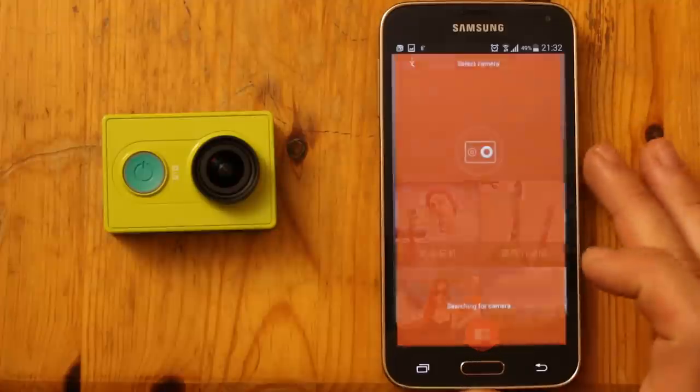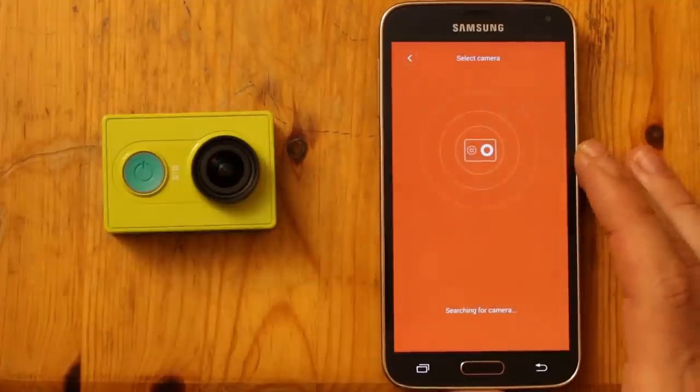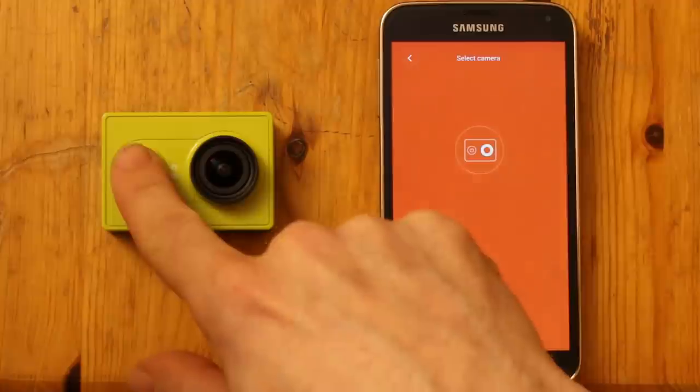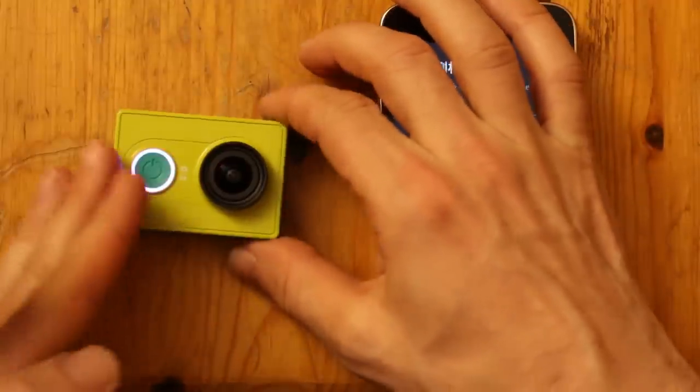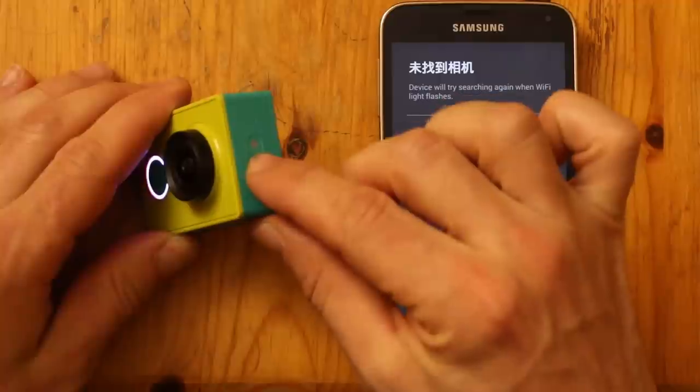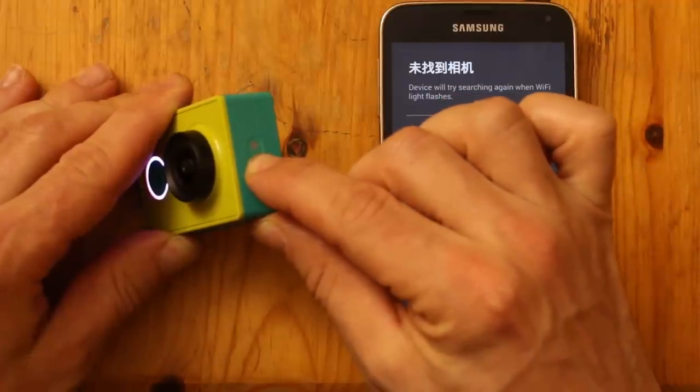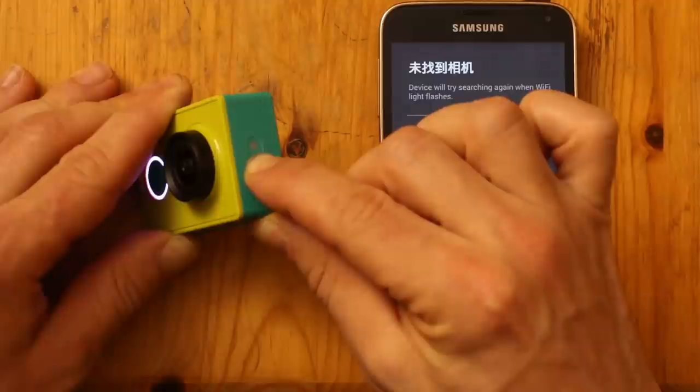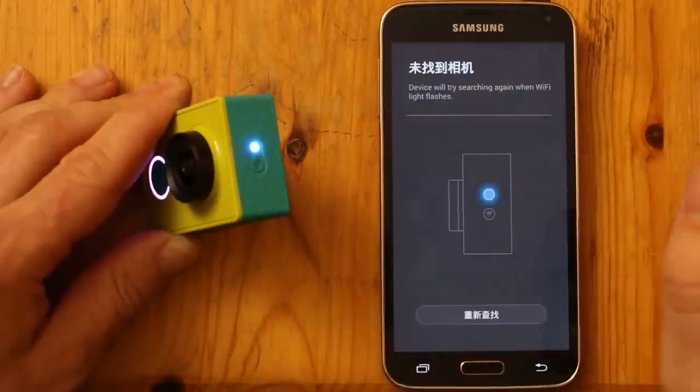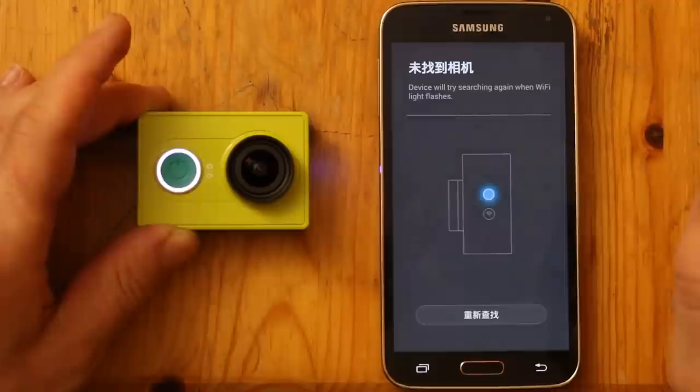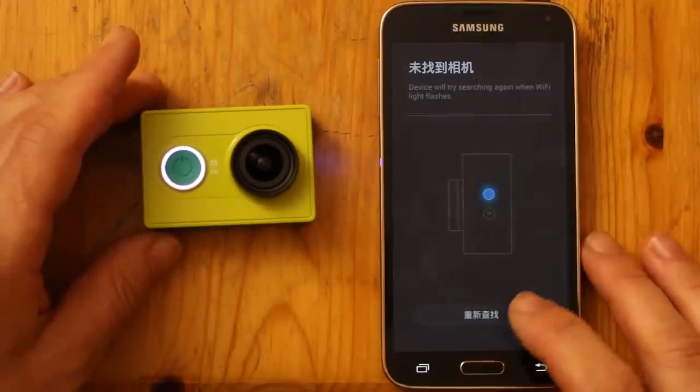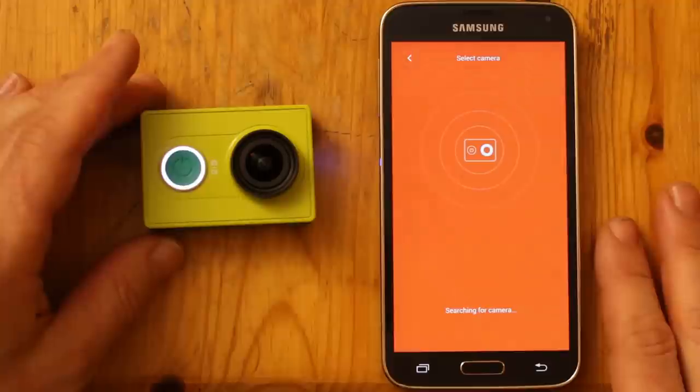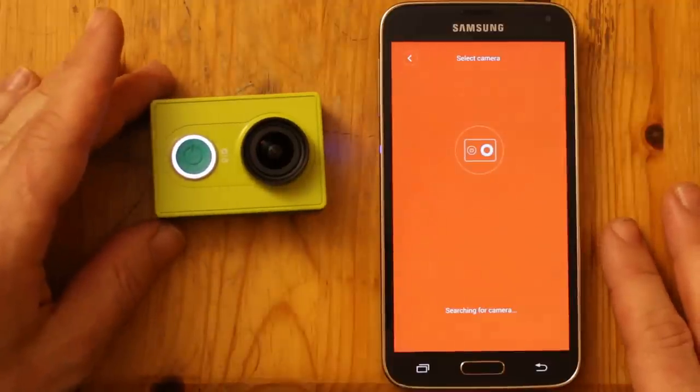So, when you open the app, it's searching for the camera. What you need to do is you need to turn the camera on and you need to then turn on the Wi-Fi by holding down the Wi-Fi button on the side for a while. There we go. So now the Wi-Fi is on. So it's searching for the camera now.